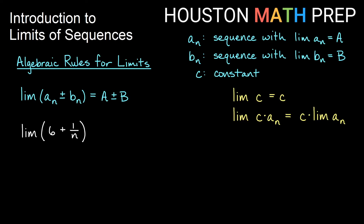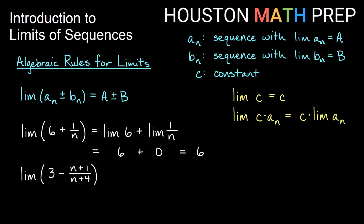For example, the limit of 6 plus 1 over n: split it into the limit of 6 plus the limit of 1 over n. The limit of 6 is 6, and the limit of 1 over n is 0, so we get 6 plus 0 — this converges to 6. Another example: 3 minus (n plus 1) over (n plus 4). The limit of 3 is 3. For (n+1)/(n+4), both top and bottom are degree 1, so compare leading coefficients: 1n over 1n gives a limit of 1. Therefore 3 minus 1 equals 2.